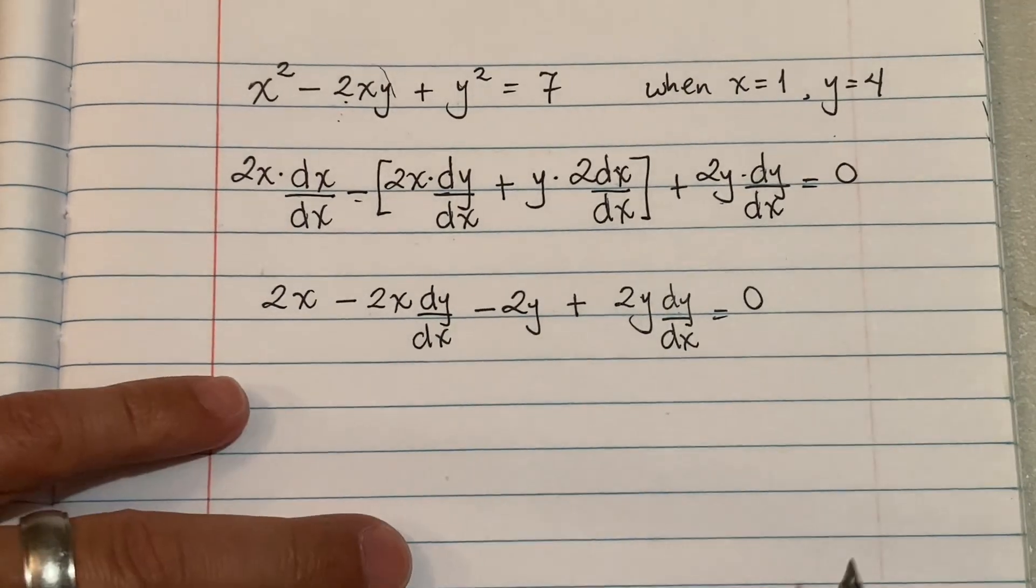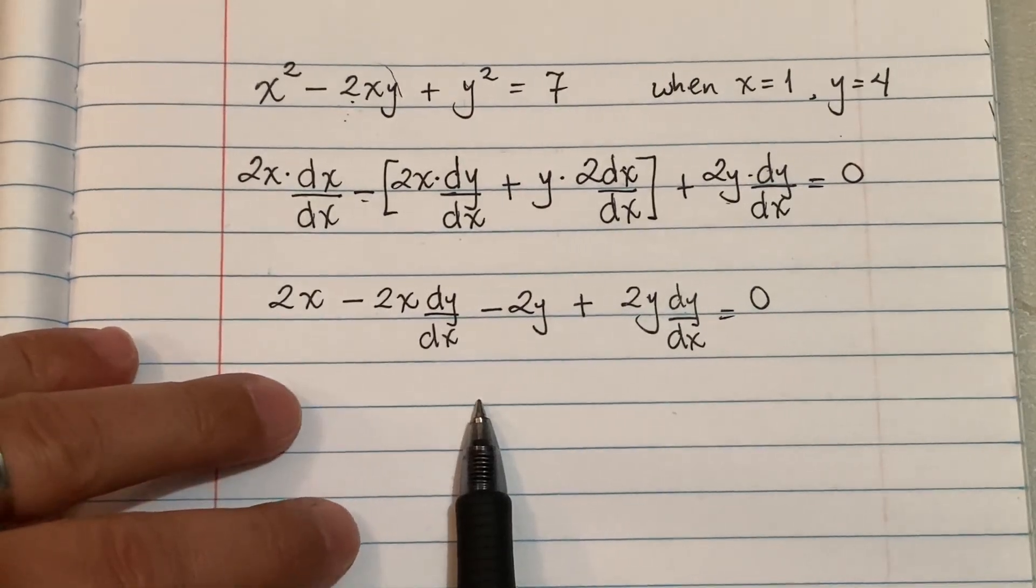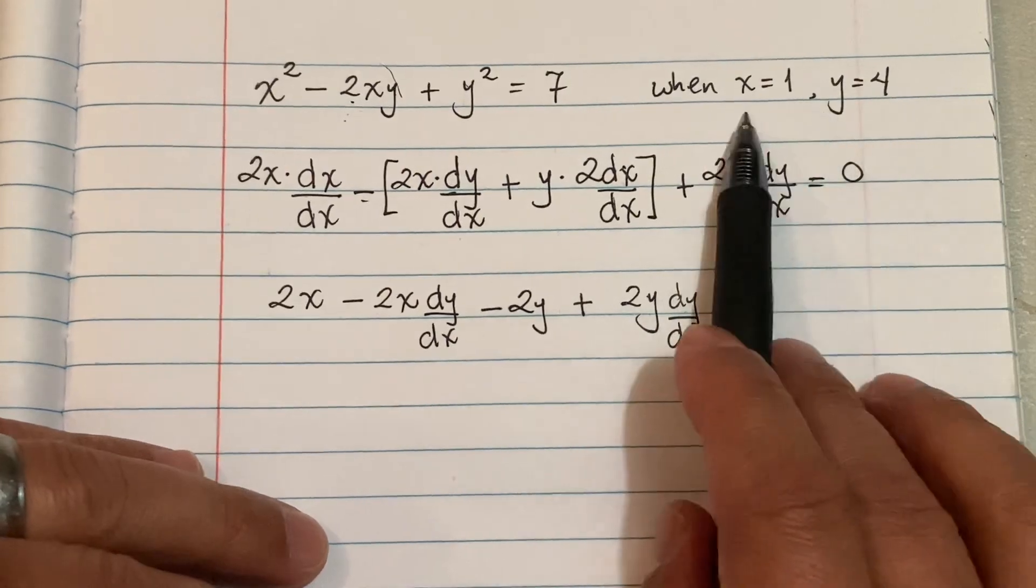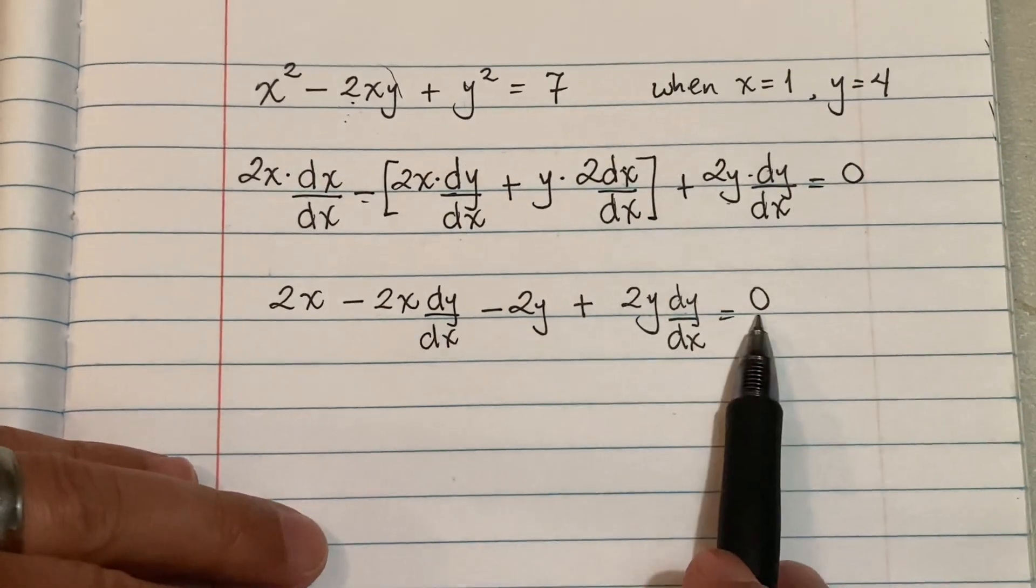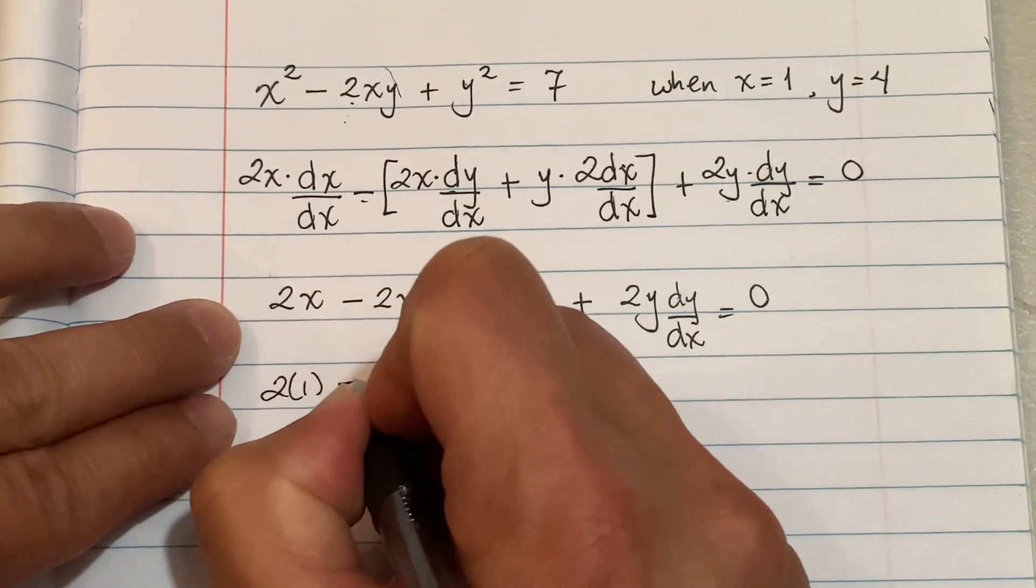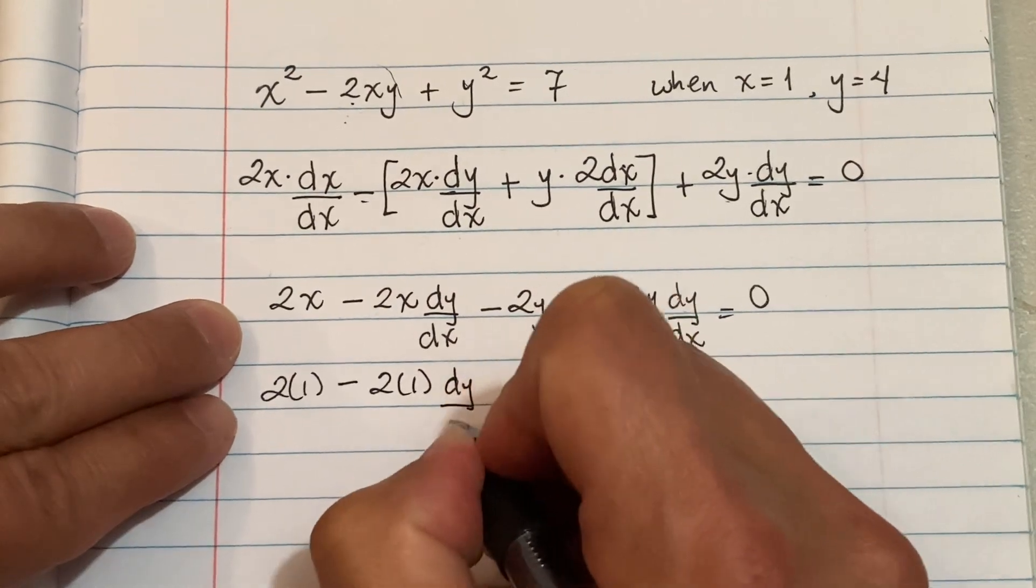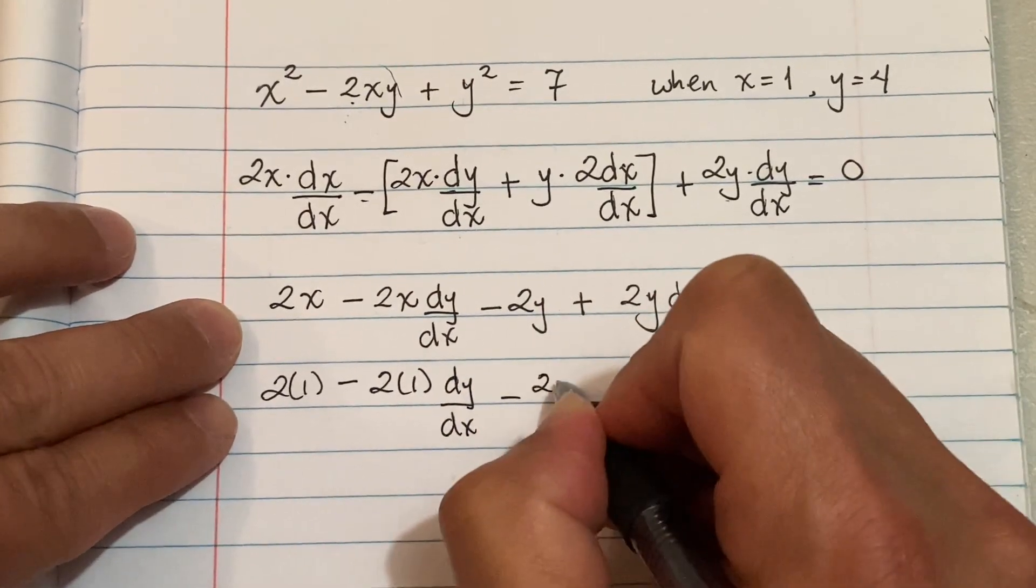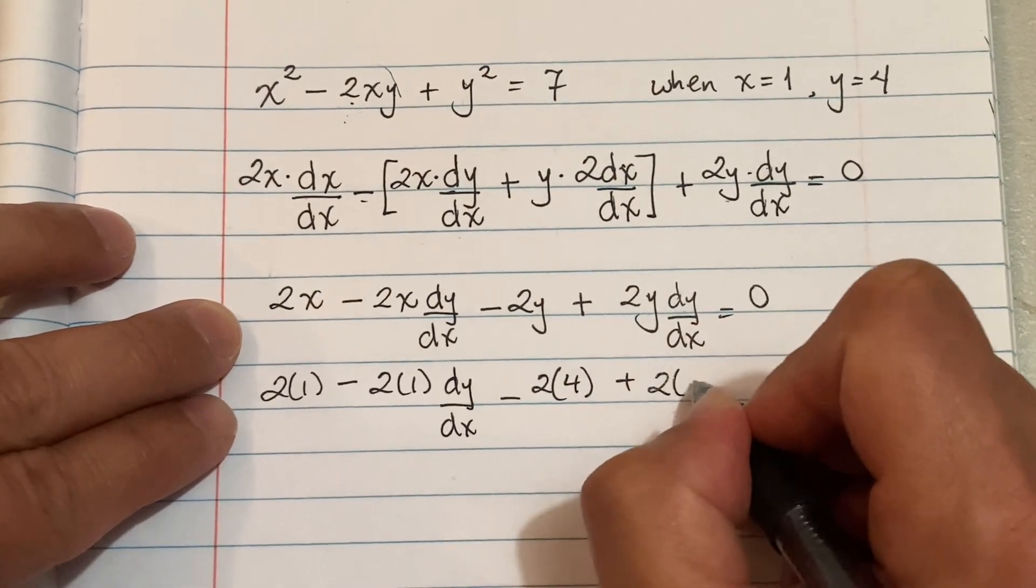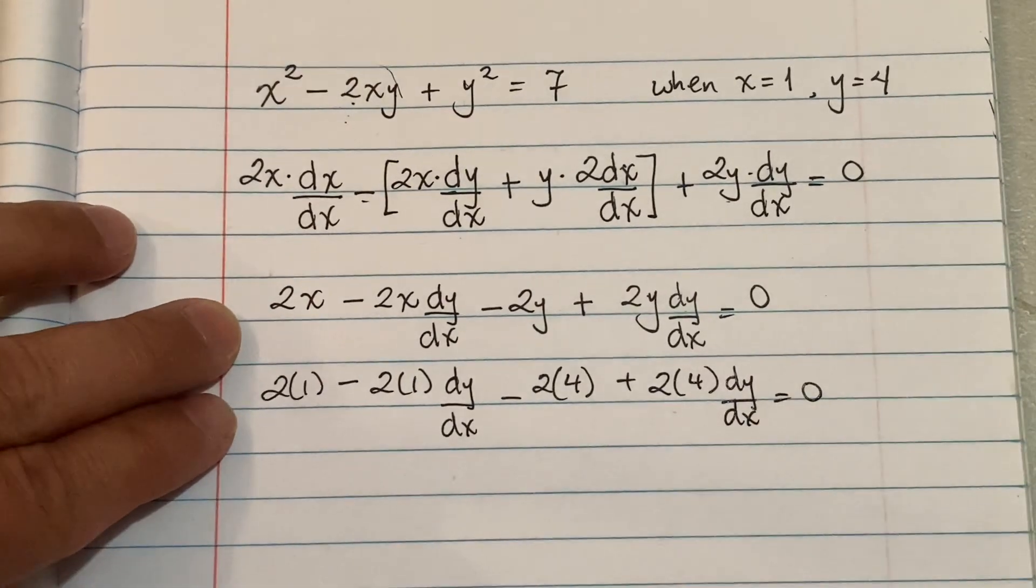Now at this point you have to start rearranging and combining like terms. Sometimes students get confused. If they're gonna ask you to find the derivative, the slope, and they give you the values, sometimes it'll be easier to just plug these things right in. So X equals 1, let's go ahead and put that in there: 2 times 1 minus 2 times 1 dy/dx, minus Y is 4, plus 2 times 4 dy/dx equals 0.